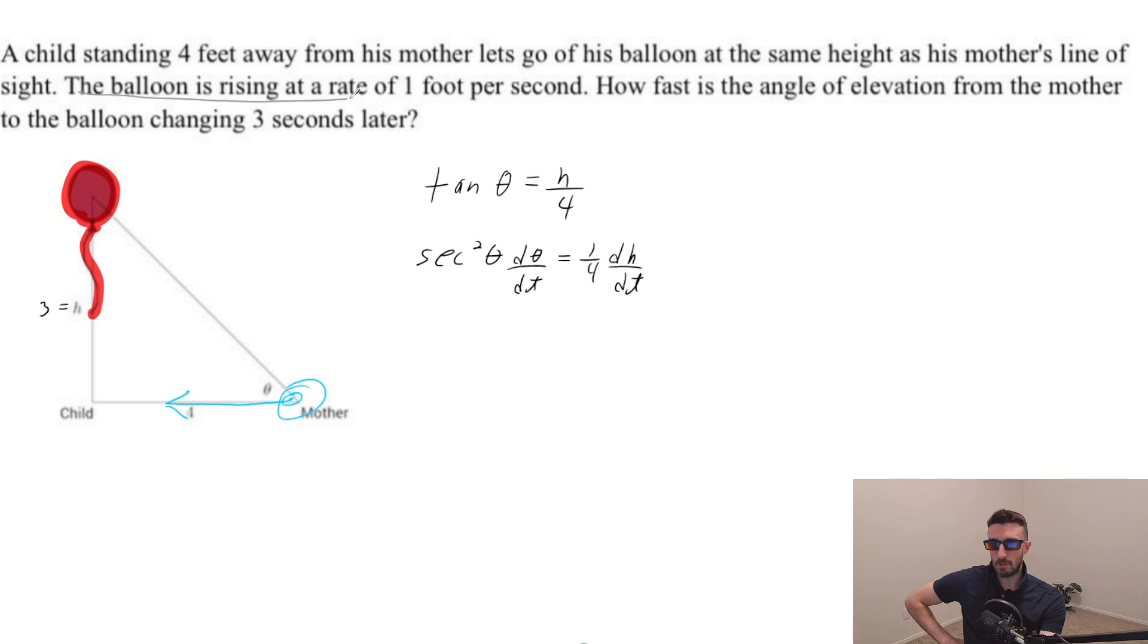Now, we know that the balloon is rising at the rate of one foot per second, so I could put a one there. But what they're asking for is how fast is the angle of elevation from the mother to the balloon changing three seconds later?